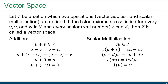Under addition, the first property is closure: if I take any two vectors and add them together, the result is still a vector in the set. The second is the commutative property: if I take vectors u and v and add them together, I get exactly the same result as taking v and adding u.